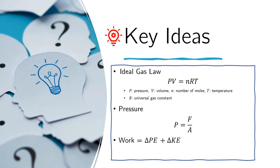Let us review some concepts relevant to this problem. First is the ideal gas law, which states that PV equals NRT, where P is the pressure, V the volume, N the number of moles, and T the temperature of the ideal gas. R is the universal gas constant. We also recall that pressure is defined as the force per unit area — the force exerted on a surface per unit area of that surface. We also recall that work is the change in energy, that means the change in potential energy plus the change in kinetic energy.